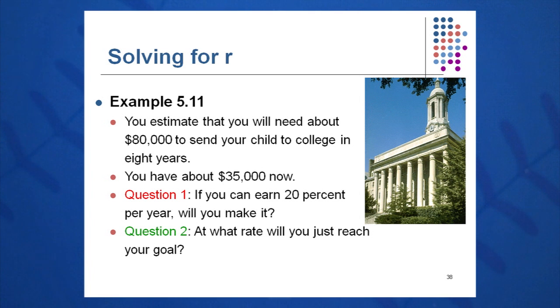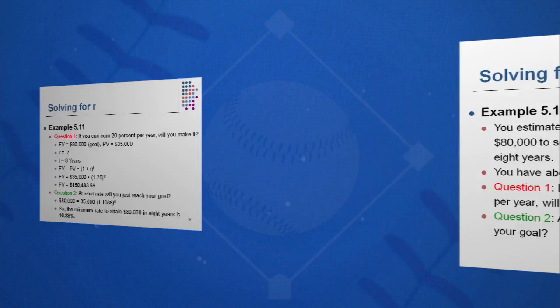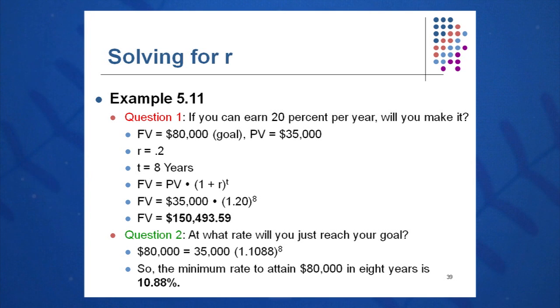You can earn 20% per year. Will you make it if you aggressively invest? That, to me, sounds like a high-risk investment, but nevertheless, you think you can get that sort of return over those years. Again, Future Value equals Present Value times 1 plus R to the T, $35,000 times 1.2 to the eighth, and you're all set with about $150,000.